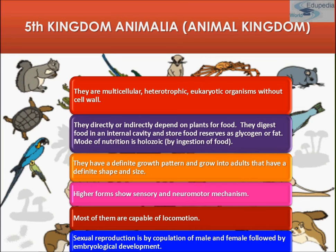They directly or indirectly depend on plants for food. They digest food in an internal cavity and store food reserves as glycogen or fat. Mode of nutrition is holozoic. They have a definite growth pattern and grow into adults with a definite shape and size. Higher forms of animals show sensory and neuromotor mechanisms. Most of them are capable of locomotion, and sexual reproduction is by copulation of male and female, followed by embryological development.